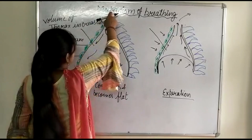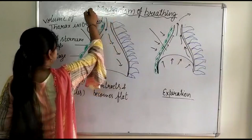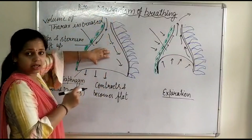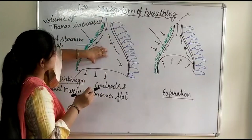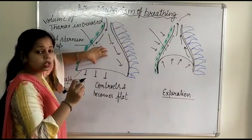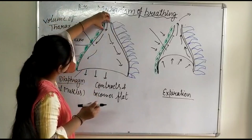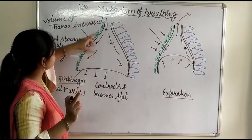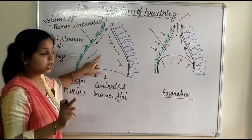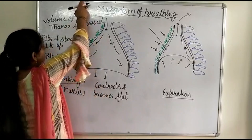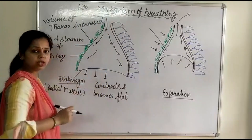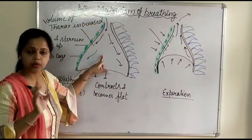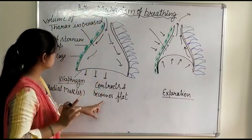The atmospheric pressure outside is now higher, while the intra-pulmonary pressure inside the lungs is lower. So air moves from higher atmospheric pressure to lower intra-pulmonary pressure. A pressure gradient has developed between the atmosphere and the lungs, and in this way air is drawn inside the lungs. That is the mechanism of inspiration.